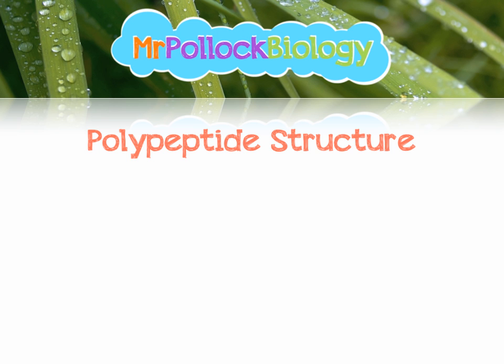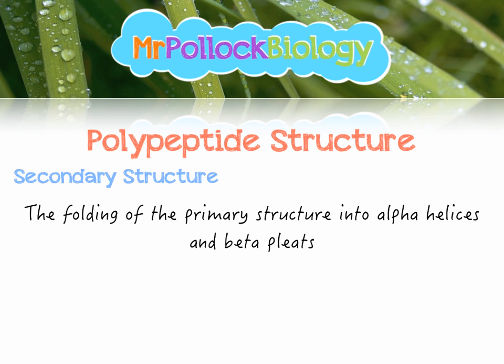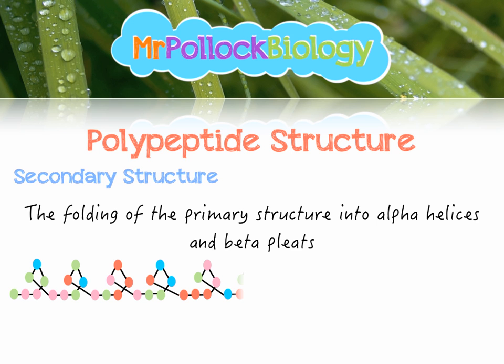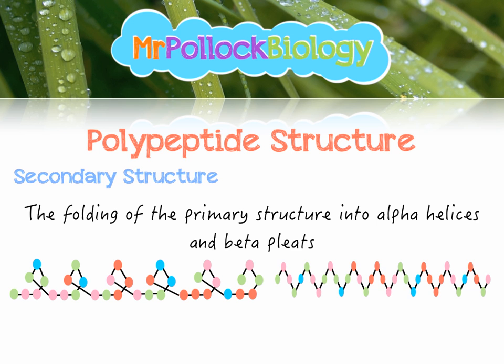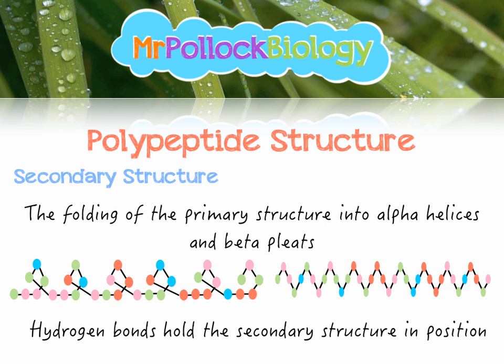Moving on to the secondary structure. The secondary structure is the way that the primary structure folds, and it can form two major structures: alpha helices, which are like corkscrews, or beta pleated sheets, which are like kinked regions. These are held in place by weak forces of attraction called hydrogen bonds, which are very weak and can be broken easily.